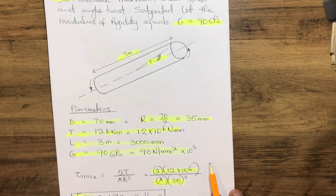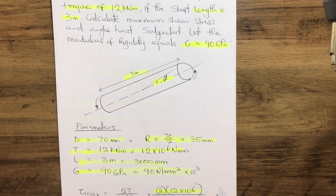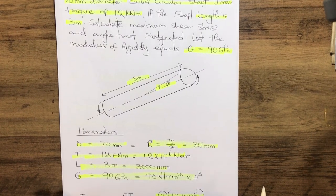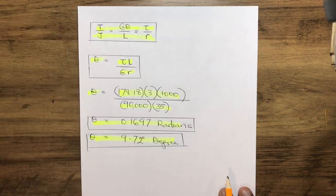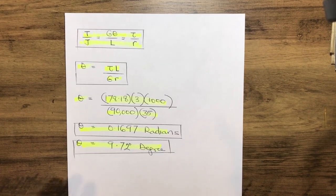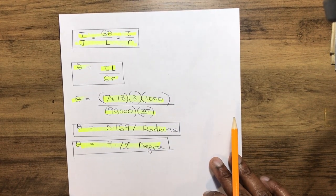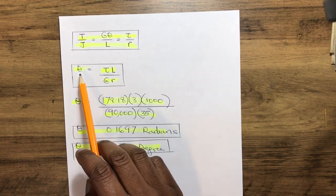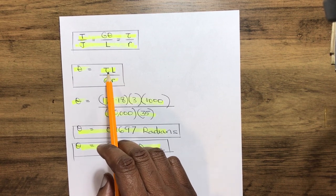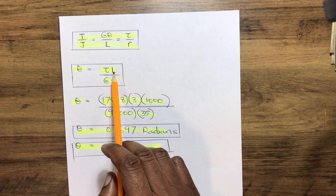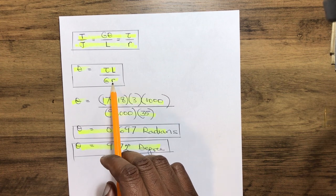Next to be calculated is the angle of twist. Using the torsion formula: T over J equals G times θ over L, which also equals τ over r. Here θ is the angle of twist, τ is the maximum shear stress already calculated, L is the shaft length, G is the modulus of rigidity at 90 gigapascals, and r is the radius of the shaft.